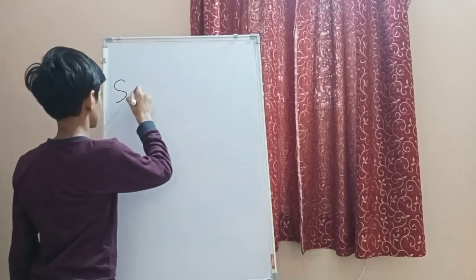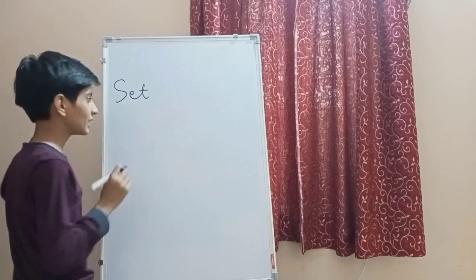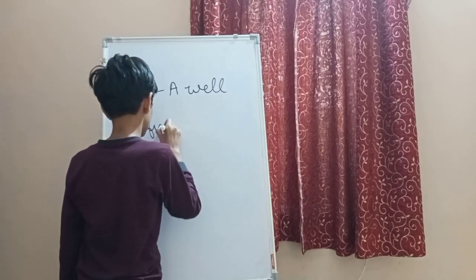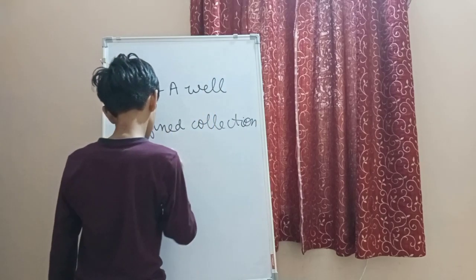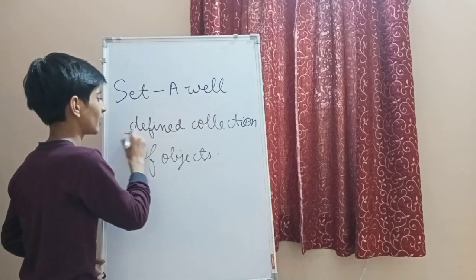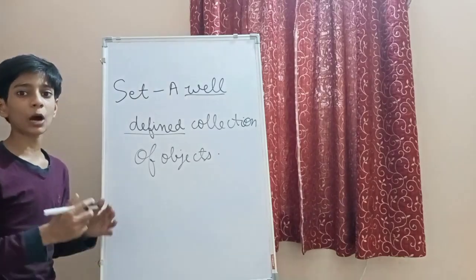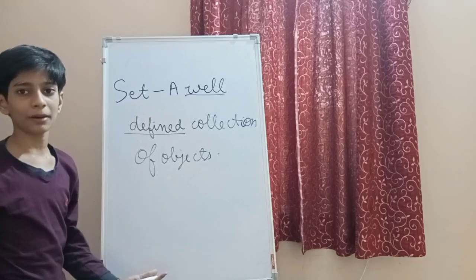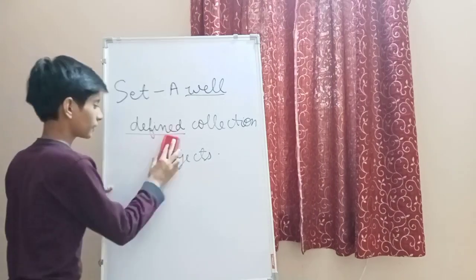So what is a set? A set is a well-defined collection of objects. Now what do you understand by the word 'well-defined'? Well-defined means that anything which can be counted by us easily and anything which is limited to an extent — like the first five prime numbers, which can be counted by us easily. So now we understand what is a set and what is the meaning of well-defined.